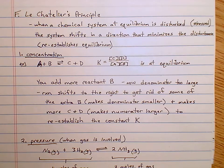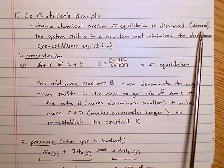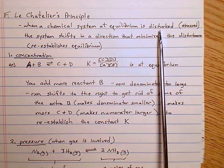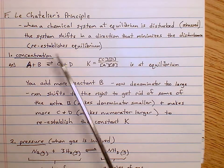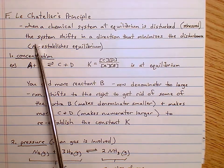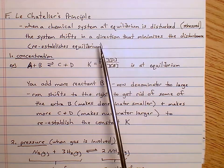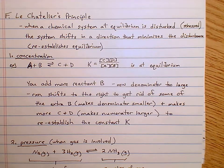He looked at equilibrium constants and equilibrium equations and asked: what happens if you mess it up? What happens if you have a system at equilibrium and you disturb it? Le Chatelier called it applying a stress to the equilibrium. If you disturb the system, the reaction will shift left or right to minimize the disturbance and reestablish the equilibrium.